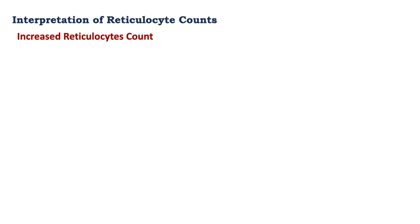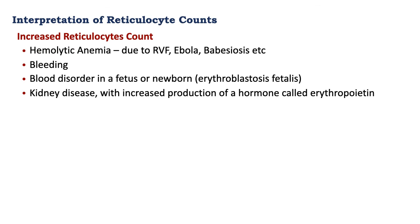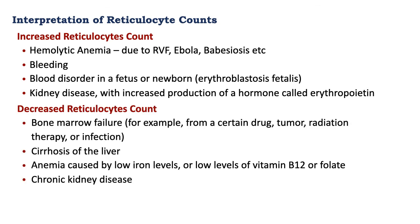To interpret the results: an increase in reticulocyte count suggests hemolytic anemia, bleeding disorder, or kidney disease where there's been an increase in production of the hormone erythropoietin. A decreased reticulocyte count will indicate bone marrow failure, liver cirrhosis, anemia caused by low levels of iron, low levels of vitamin B12 or folate, or chronic kidney disease.